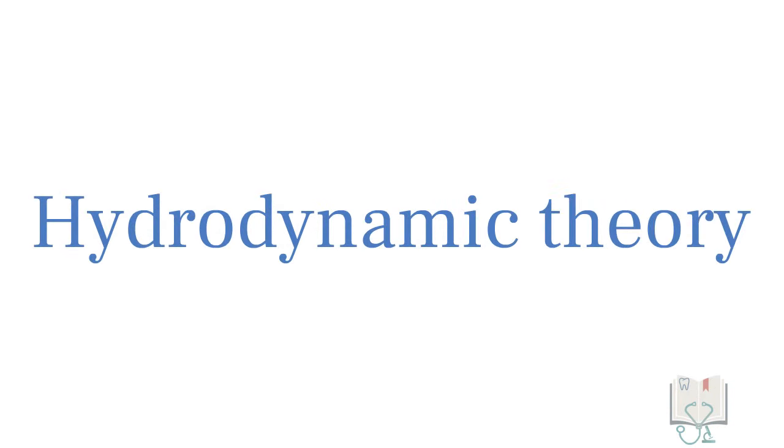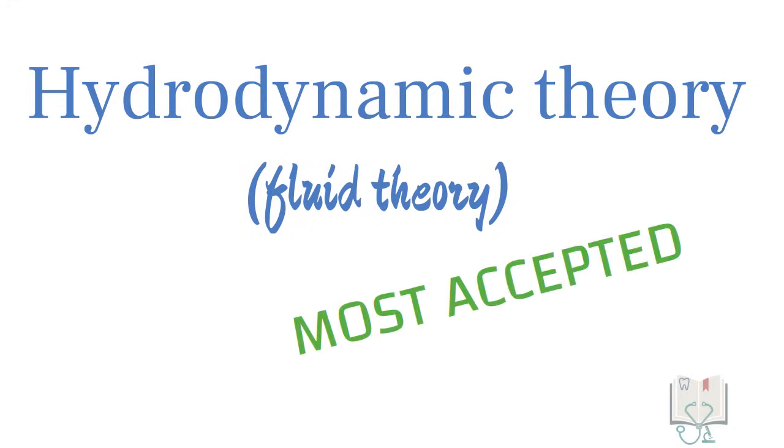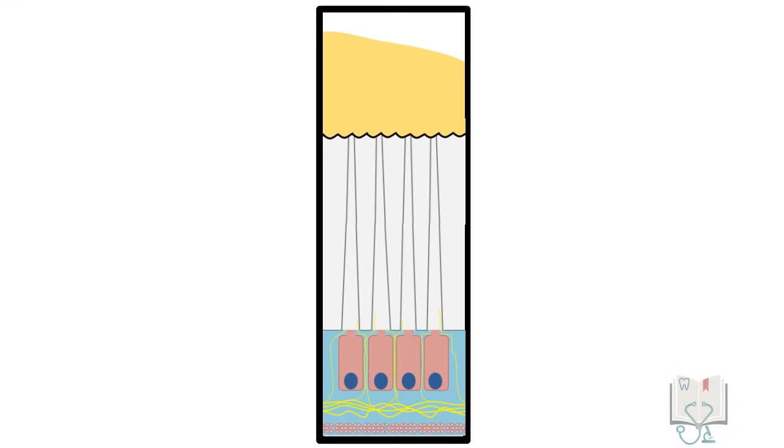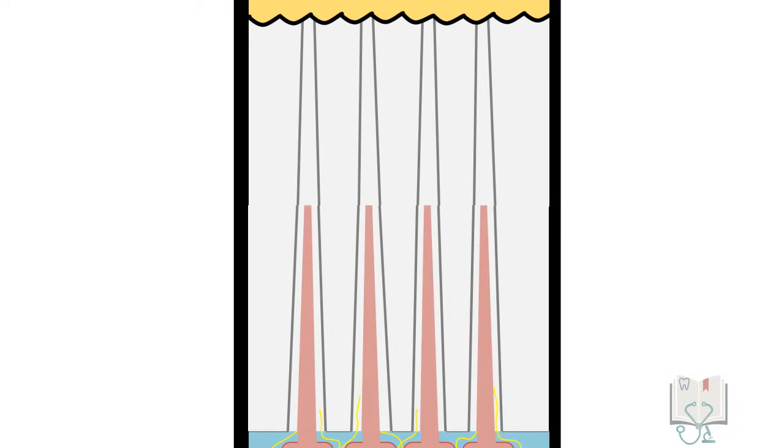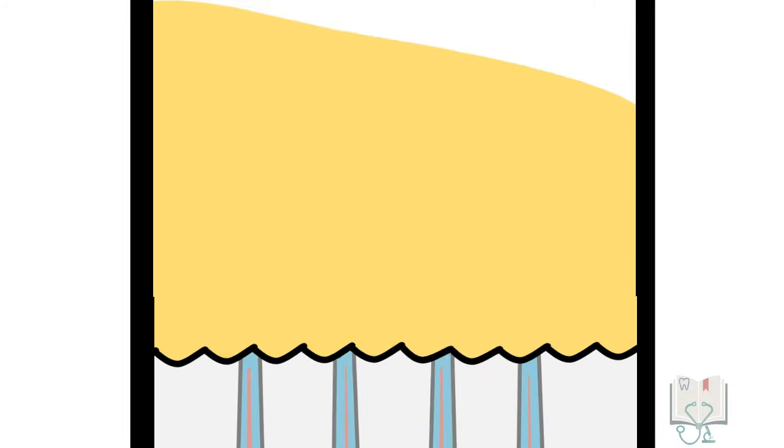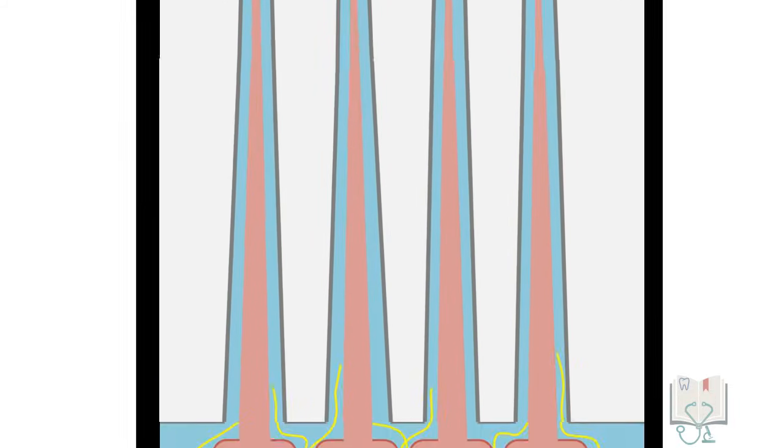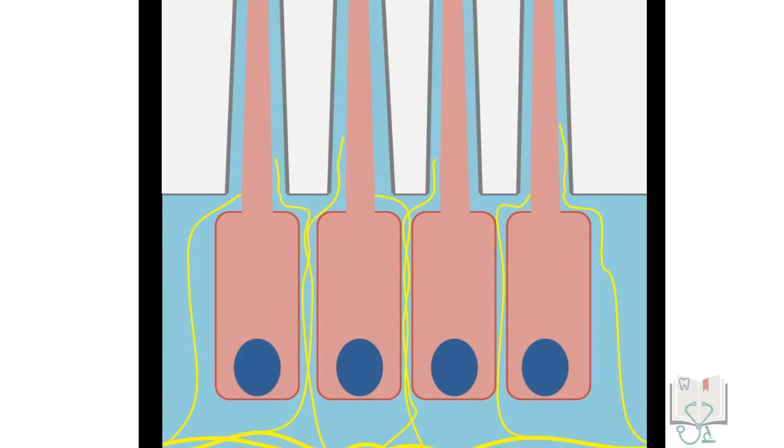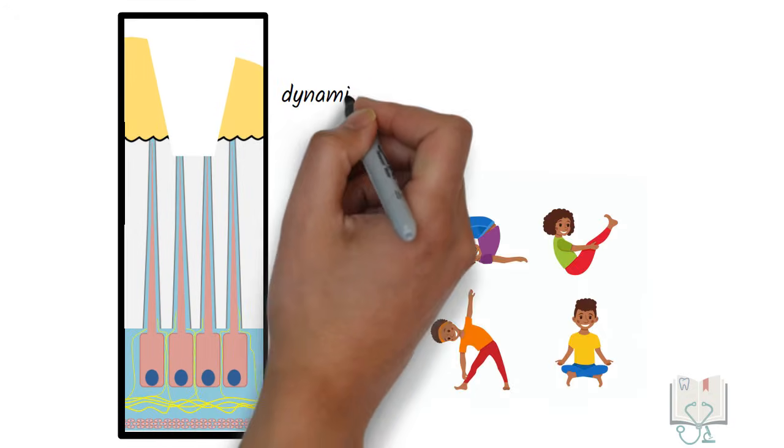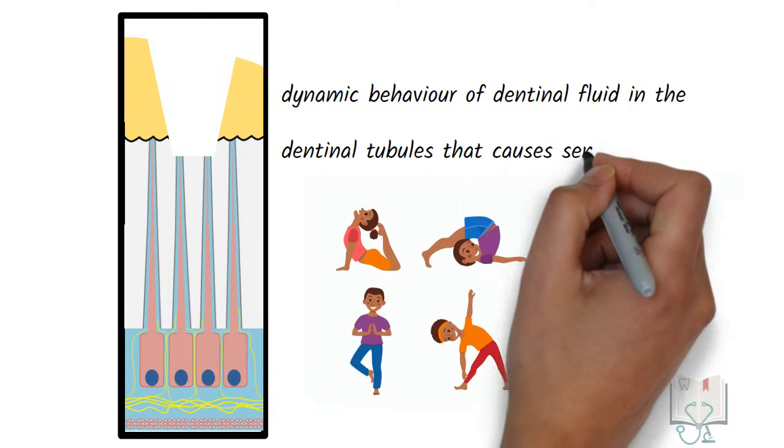Hydrodynamic Theory, also known as the Fluid Theory, is the most accepted theory. As we know, dentinal tubules contain odontoblastic process, and the space between the odontoblastic process and wall of dentinal tubule is filled with dentinal fluid. So if dentin gets exposed, this dentinal fluid directly connects the outside environment to the pulp. This theory states that it is the dynamic behavior of this dentinal fluid in the dentinal tubules that causes sensitivity.